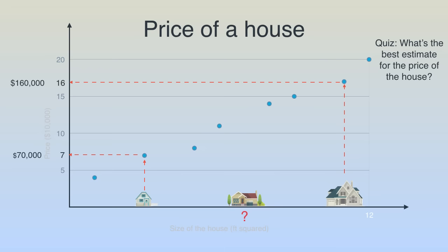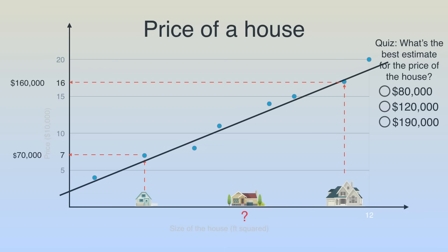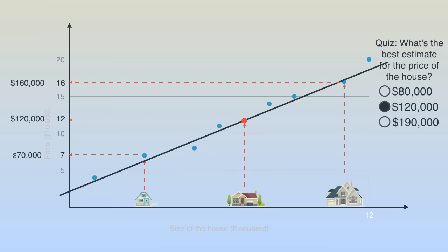Time for a small quiz: what is the best guess for the price of the medium house given this data? Would it be $80,000, $120,000, or $190,000? The blue points form a line, so we draw the line that best fits the data. On this line, our best guess for the price is $120,000. So if you said $120,000 that is correct. This method is known as linear regression.